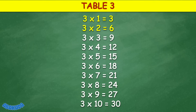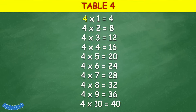Table 3: 3 times 1 equals 3, 3 times 2 equals 6, 3 times 3 equals 9, 3 times 4 equals 12, 3 times 5 equals 15, 3 times 6 equals 18, 3 times 7 equals 21, 3 times 8 equals 24, 3 times 9 equals 27, 3 times 10 equals 30.